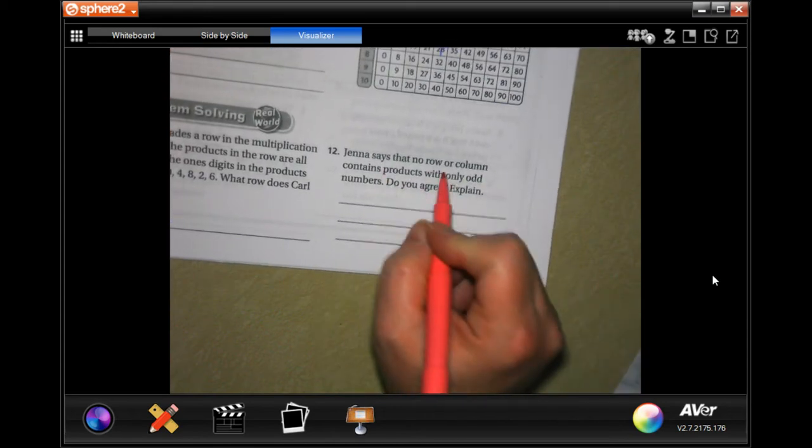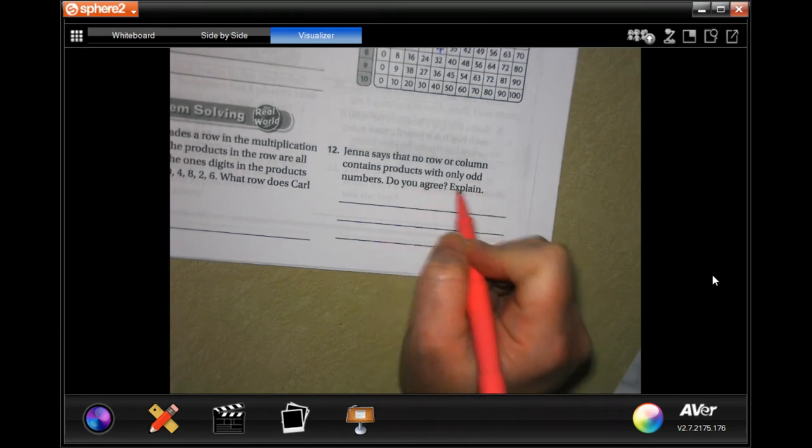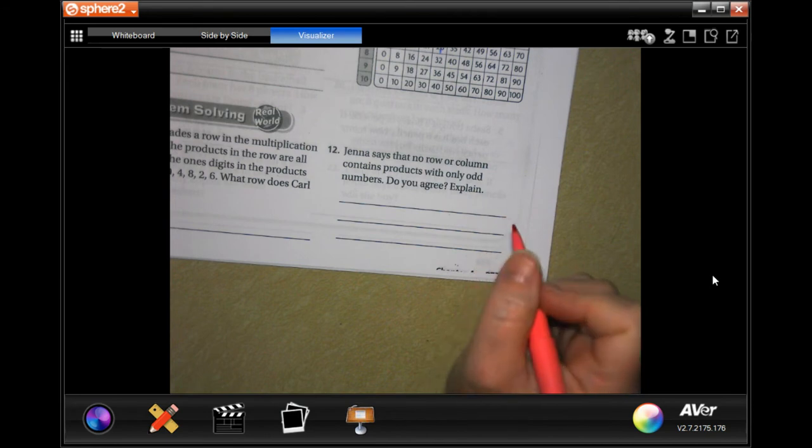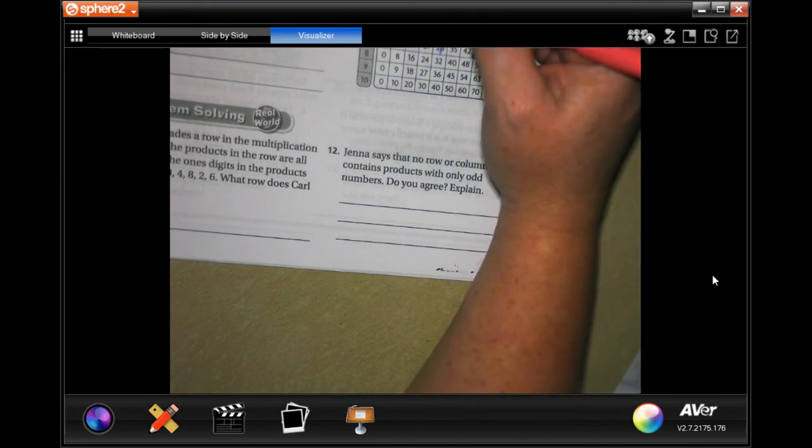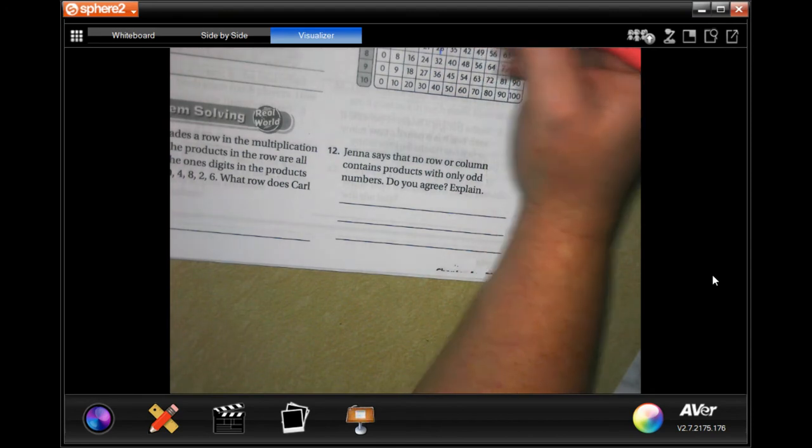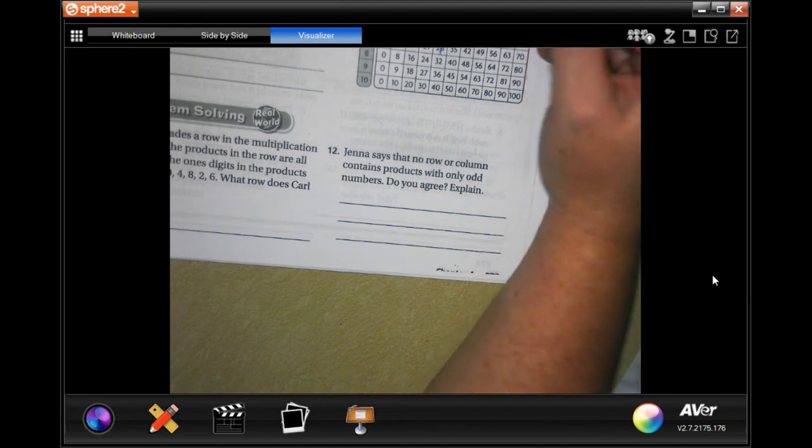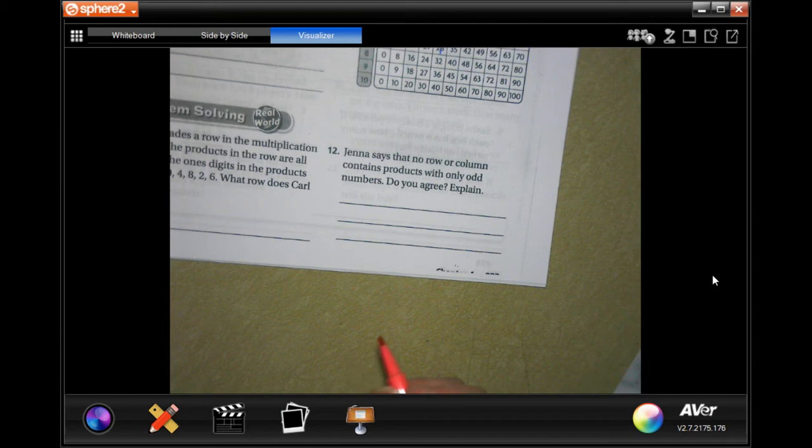Jenna said that no row or column contains product with only odd numbers. Do you agree? So let's find odd numbers. One, well there's a two, that's not going to be odd. Three, there's a six, that's not going to be odd. Five, there's ten, that's not odd. Seven, 14 is not odd. And nine, 18 is not odd.